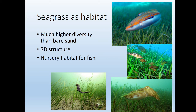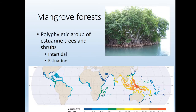Organisms are really using seagrass habitats as nurseries. There's lots of food and much more three-dimensional structure, so small baby fish can hide around the grass and grow to a relatively large size before needing to venture out into the open ocean on their own.